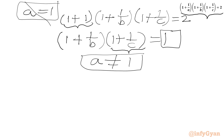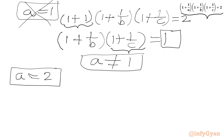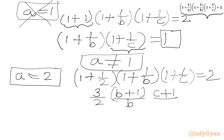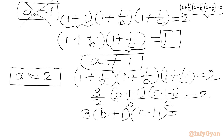Now we check A = 2. Plugging in: (3/2) · ((B+1)/B) · ((C+1)/C) = 2. Multiplying both sides by 2BC gives 3(B+1)(C+1) = 4BC.